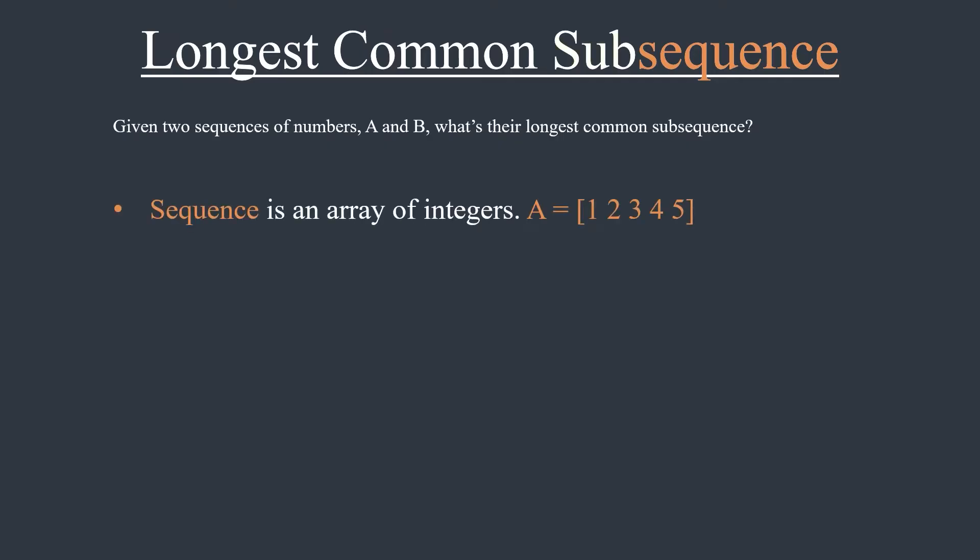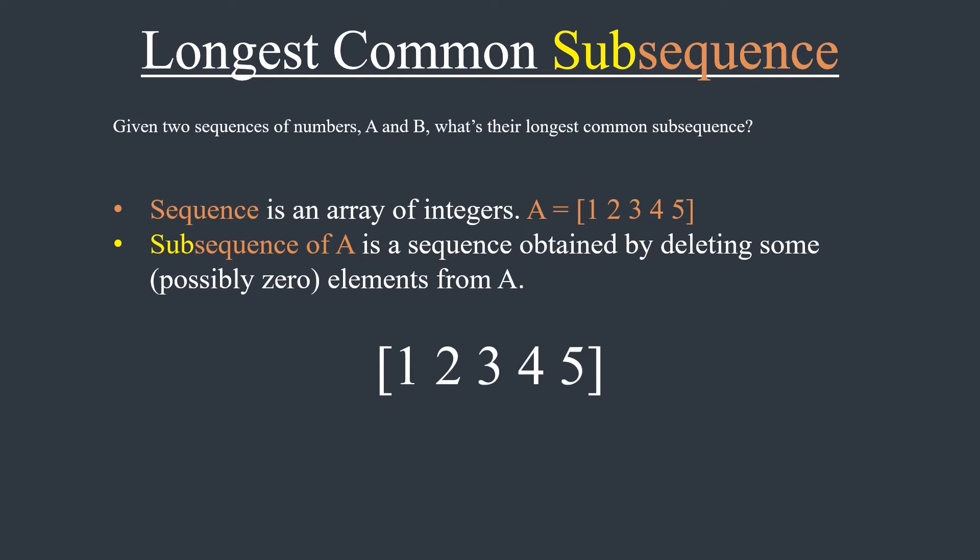Subsequence is also an array of integers, but it is obtained by deleting some or possibly zero elements from the original sequence. For example, if we delete 3 and 5, we get a sequence 1, 2, and 4. So we say 1, 2, and 4 is a subsequence of 1, 2, 3, 4, 5.